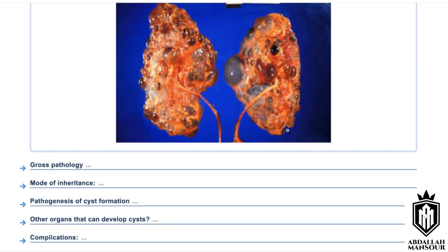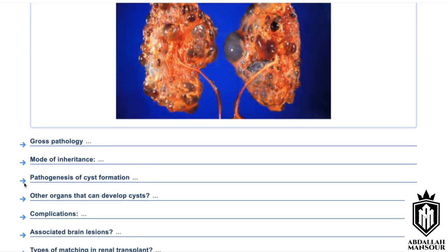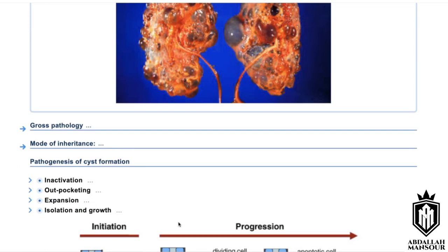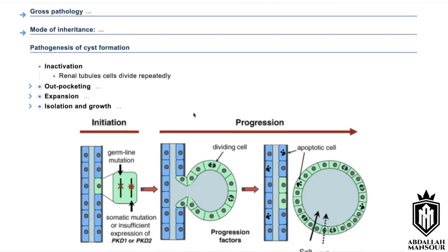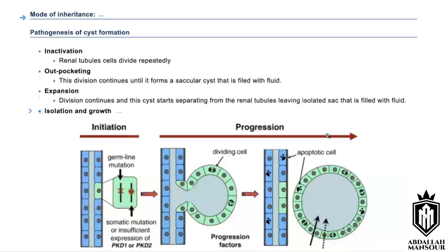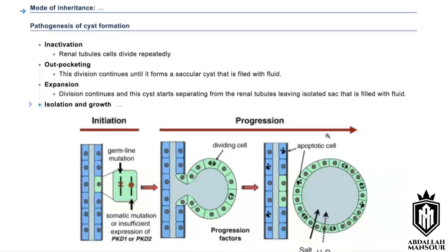The pathogenesis of cyst formation begins with inactivation, after which the renal tubule cell starts to divide repeatedly. Outpocketing occurs — meaning the division continues until a saccule forms, which is fluid-filled but still attached to the cells. Then expansion occurs until the saccule is completely separated, forming an isolated sac.